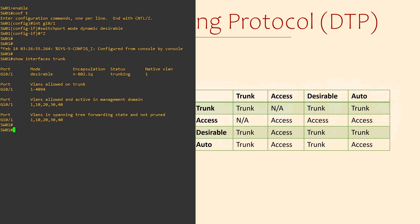When the auto option is configured, we're telling the switch that we're happy if this interface becomes a trunk, but don't actively try to make it so. That means if the other end tries to configure the trunk link, this interface will agree and the interface will become a trunk port. The particular combination of settings will determine whether the link becomes a trunk or remains an access port.